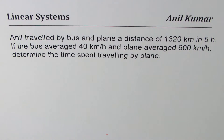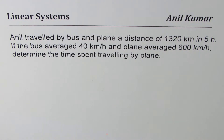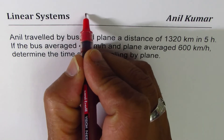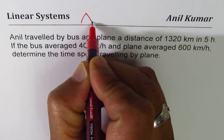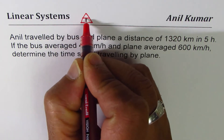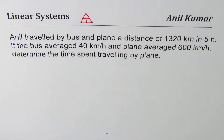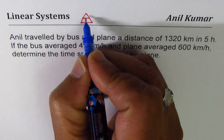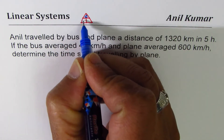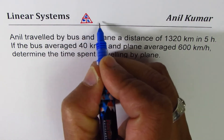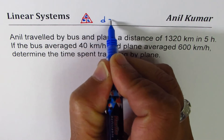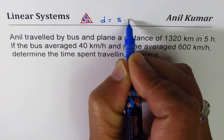I'm Amal Kumar, sharing with you videos on solving problems relating to distance, speed, and time. As you know, a triangle like this could be used to remember the relation between distance, speed, and time. Distance D equals speed times time — that's the relation.